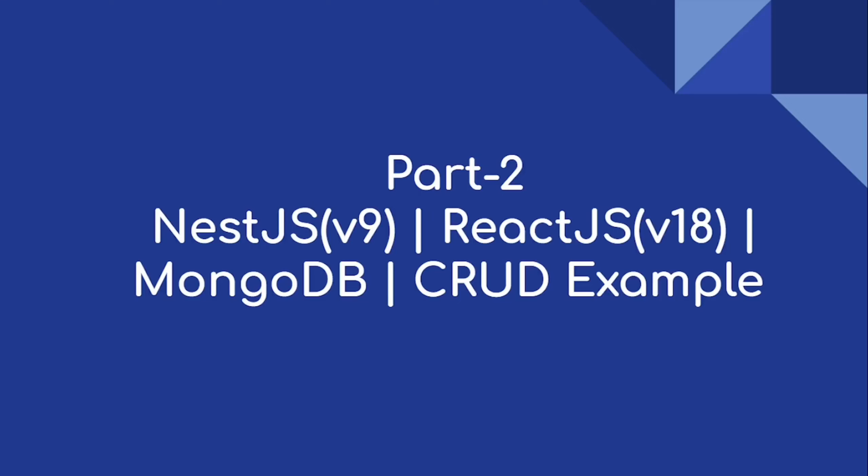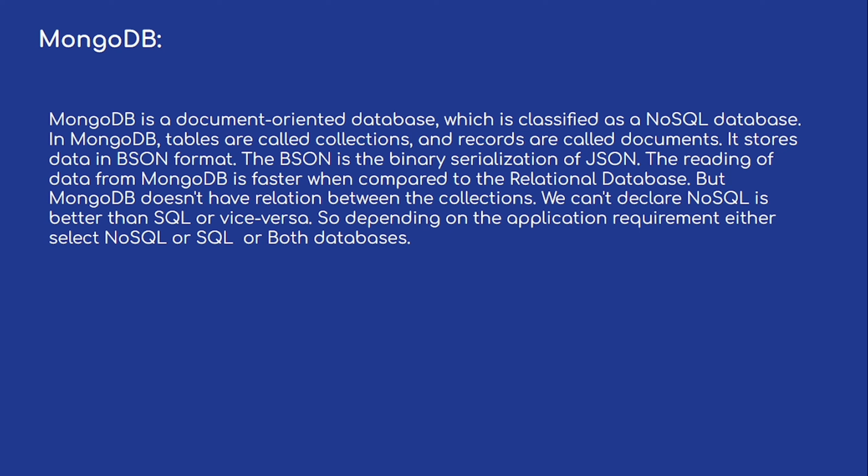Hi everyone, welcome to our channel. This is part two of our video on Next.js and React.js using MongoDB CRUD sample. What is MongoDB? If you are familiar with normal relational databases where we have tables, columns, and rows, MongoDB is a non-relational database. It is a document-oriented database — whatever record or data we save is called a document — and it is classified as a NoSQL database.